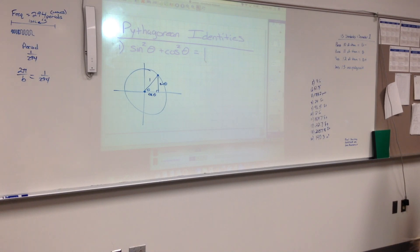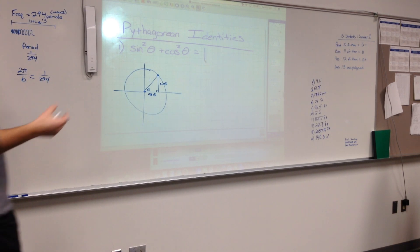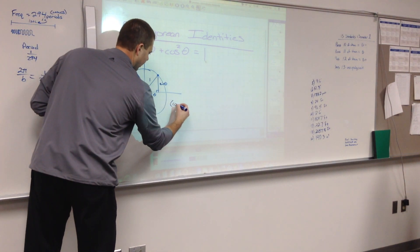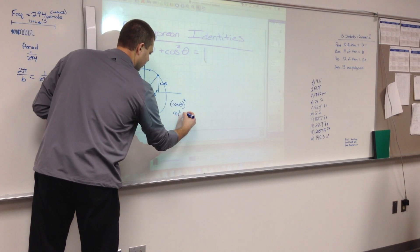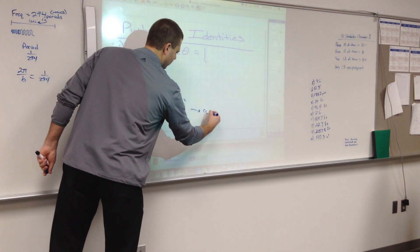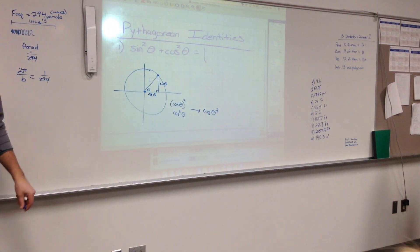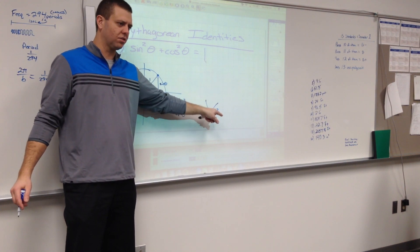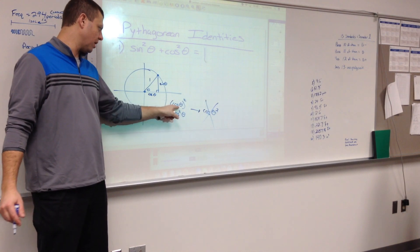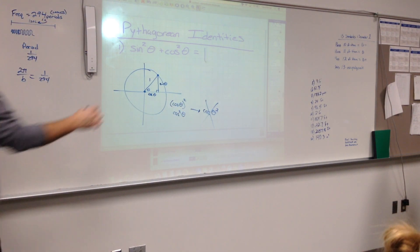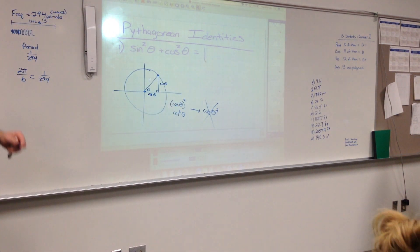A little notation note: when you square the sine or cosine of theta, you can write it two ways — either with parentheses around the whole function and the exponent outside, or with the exponent on the trig function name itself, like cos²(θ). They mean the same thing. It does not mean to square theta first and then take the cosine of that — that would be wrong. These mean to take the value of cosine theta and square it.